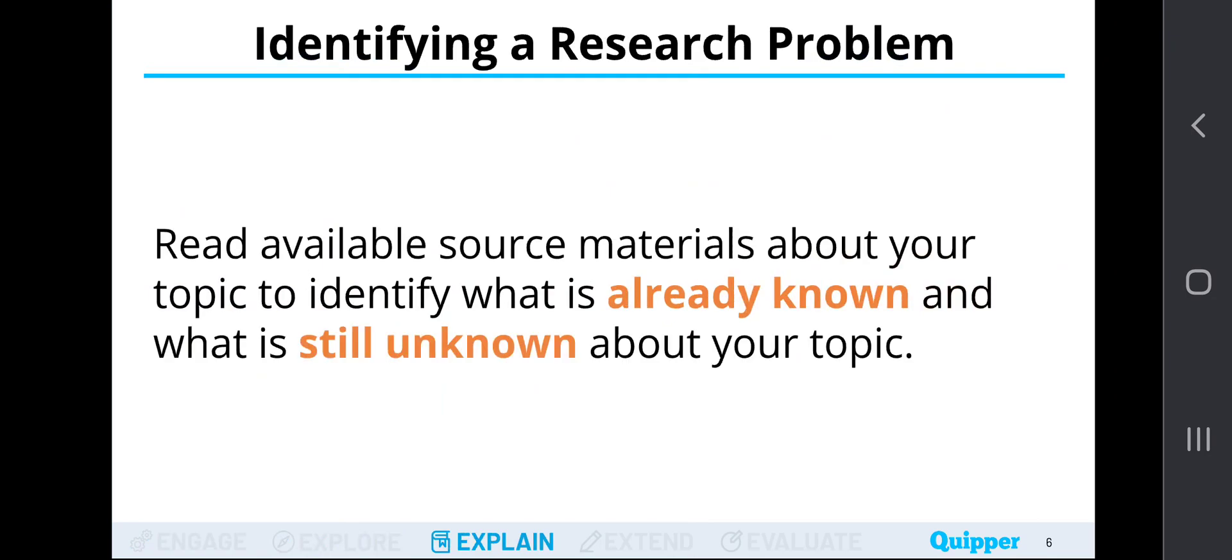Read available source materials about your topic to identify, number one, what is already known, and number two, what is still unknown about your topic. This is important in order for you to determine what are you going to look for in your topic, what have been found out, what have been deciphered out of previous research studies, and what is still unknown that could become a beacon for your research studies credibility. Because out of your research study, the possible implications of these factors in your study that you are conducting. So always remember, class, that when we are going to identify possible research problems, always read the materials or source materials available in your topic of interest to determine what is already known and what is still unknown about your topic.